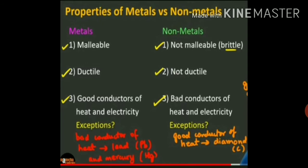The next property: metals are ductile whereas non-metals are not ductile. Most metals can be drawn into thin wires. The property which allows metals to be drawn into wires is called ductility. Gold and silver are among the best ductile metals. Copper, aluminium, iron and magnesium can be easily drawn into thin wires. The wires inside electric cables are mostly made of copper. Non-metals like sulphur and phosphorus break into pieces when stretched and do not form wires.